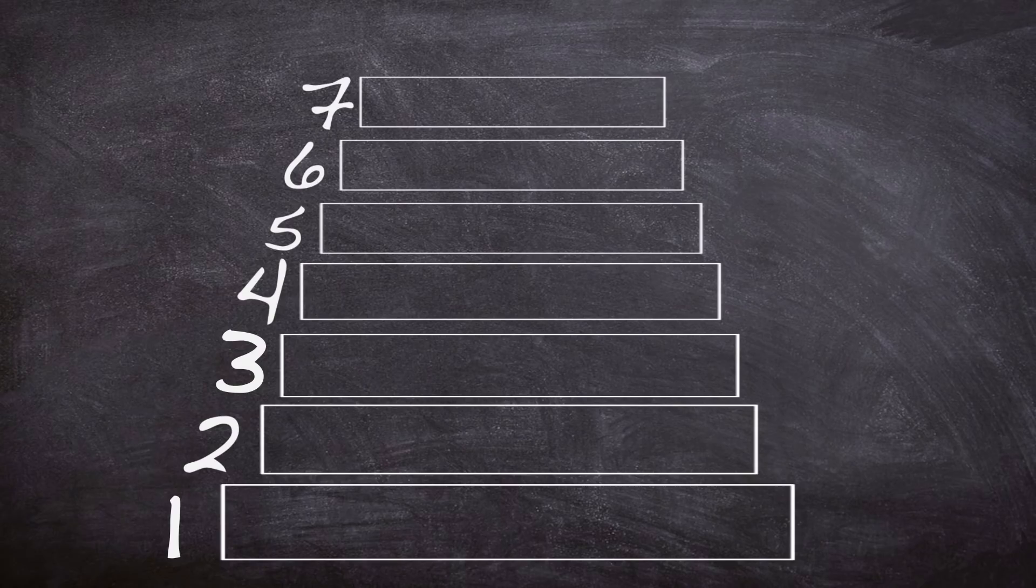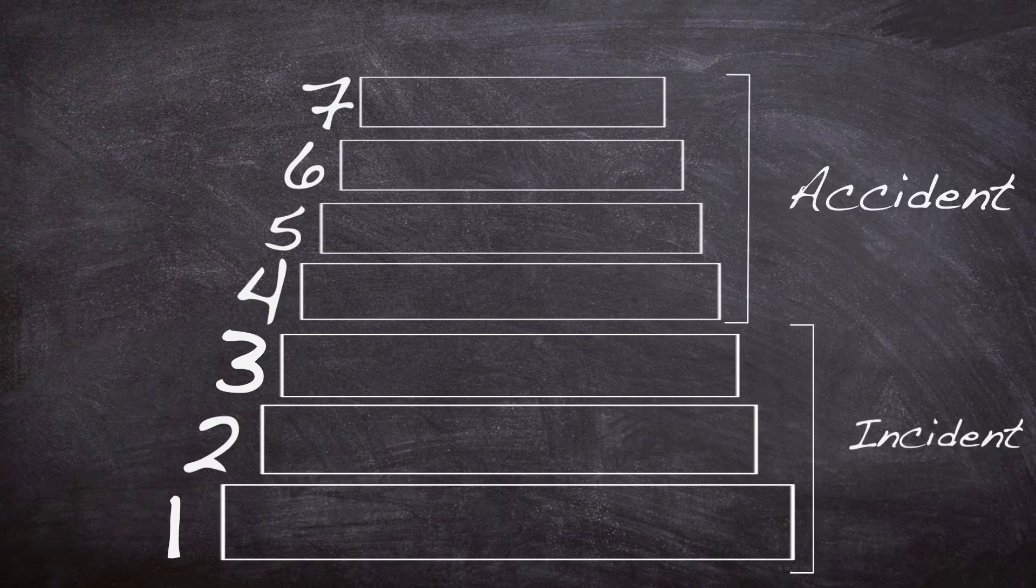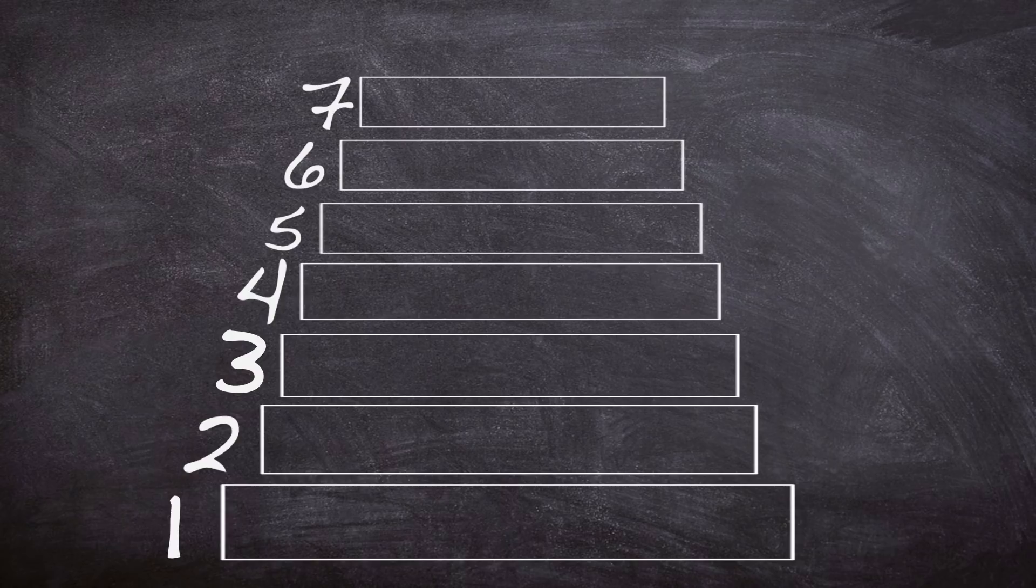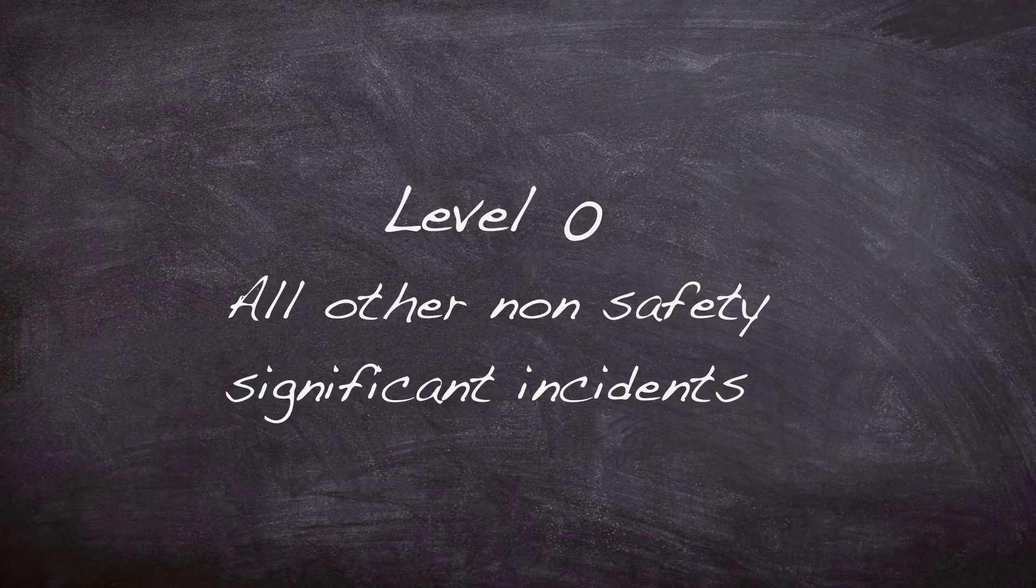The scale is further subdivided to accident which is the top 4 categories and incident which is the bottom 3. To add another level of confusion there is also a level 0, but for the point of this video that basically covers all other non-safety significant incidents.